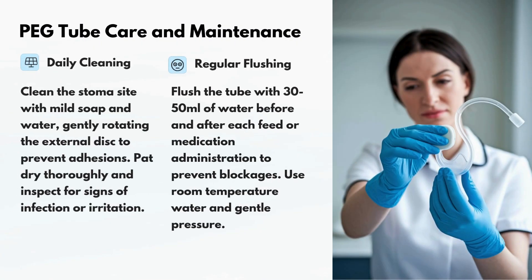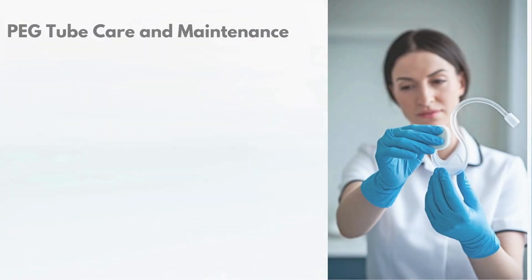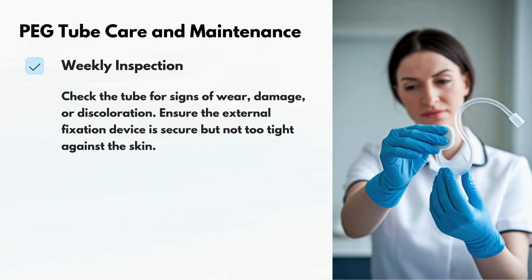PEG tube care and maintenance involves daily cleaning of the stoma site with mild soap and water, gently rotating the external disc to prevent adhesions, patting dry thoroughly, and inspecting for signs of infection or irritation. The tube should be flushed with 30–50 mL of water before and after each feed or medication administration to prevent blockages. Weekly inspection should check for signs of wear, damage, or discoloration, ensuring the external fixation device is secure but not too tight against the skin.